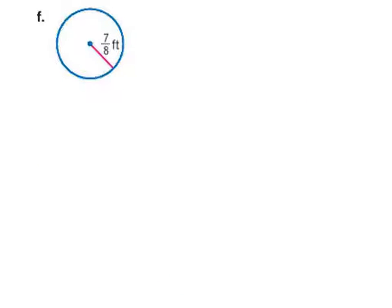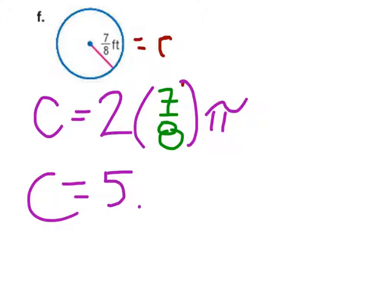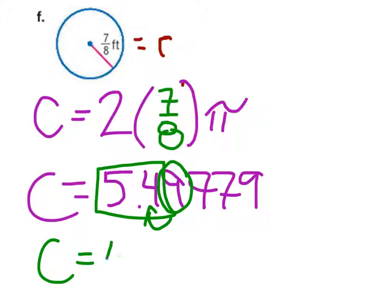Let's look at an example that gives us a radius of 7 eighths foot. Don't worry about it being a fraction — the calculator will still do the work. Circumference equals two times 7 eighths times pi, which in the calculator gives us 5.49779. Rounding to the nearest tenth: the 9 bumps this up, so the circumference is 5.5 feet.